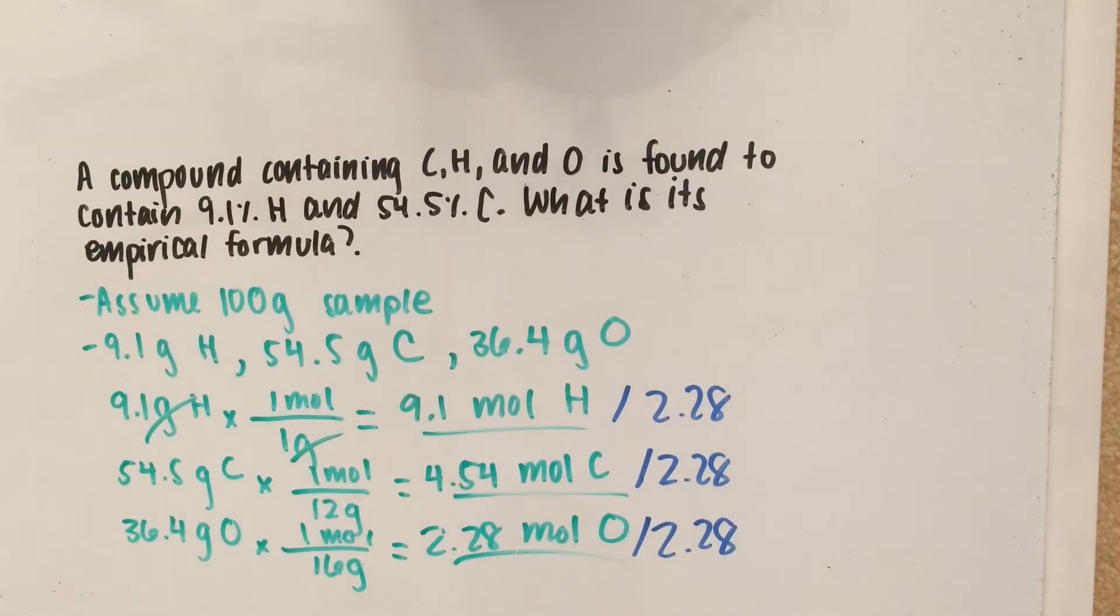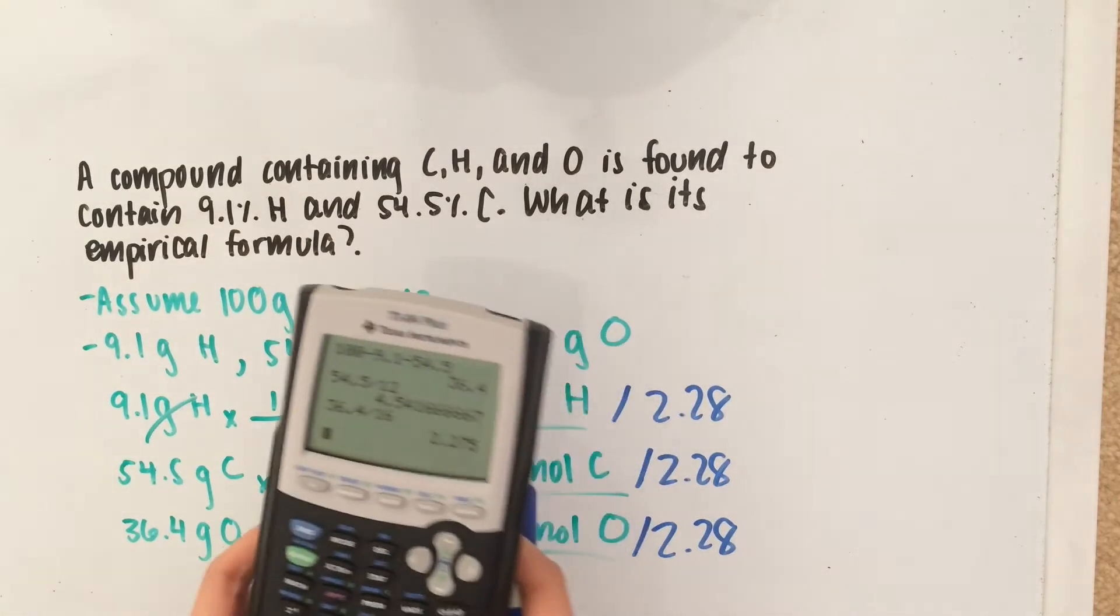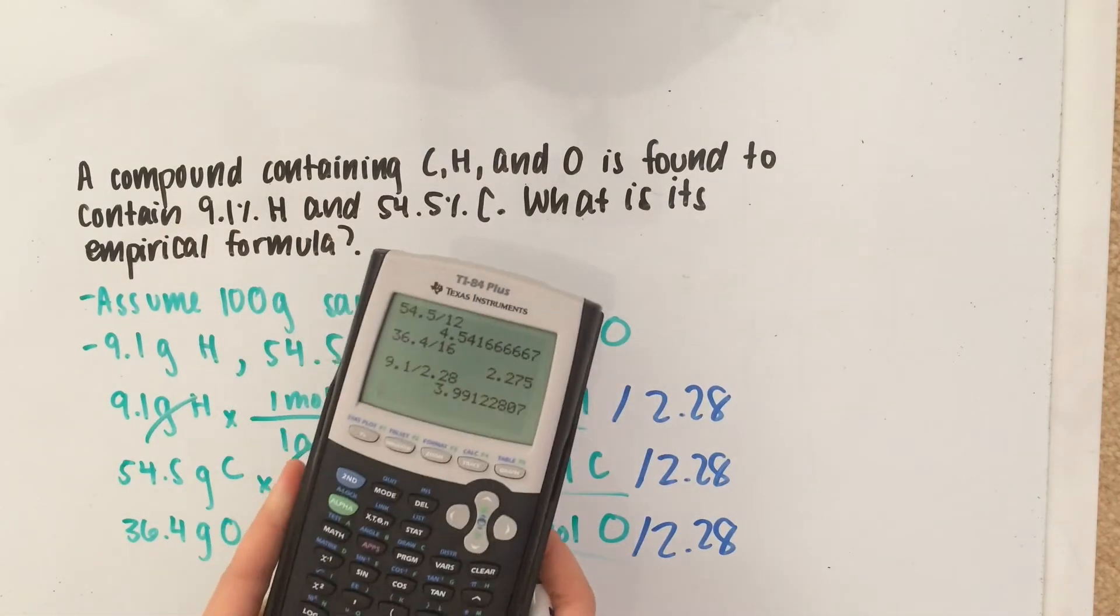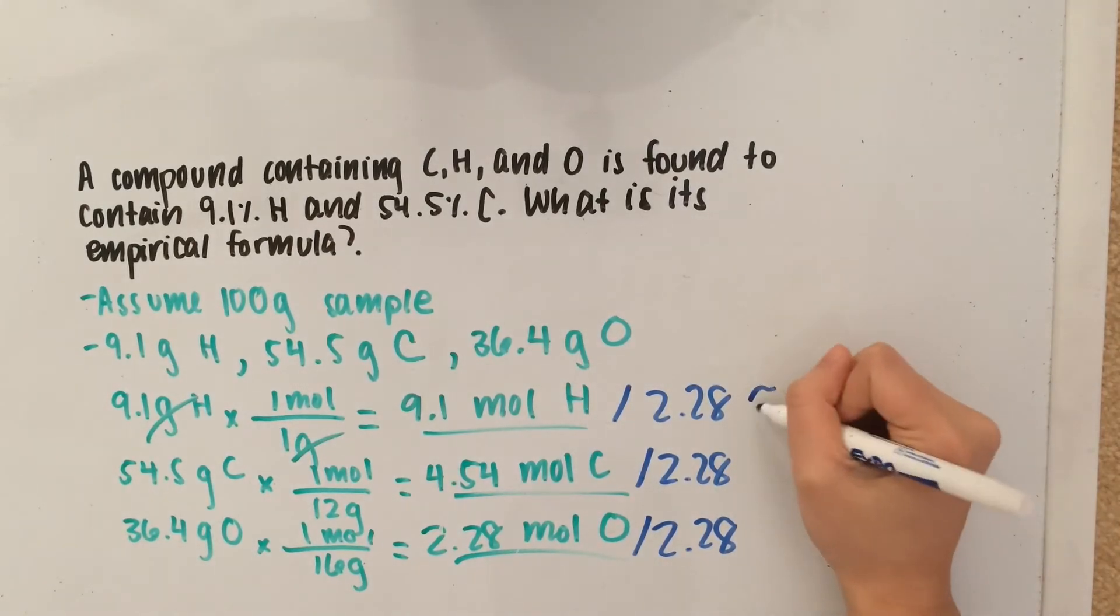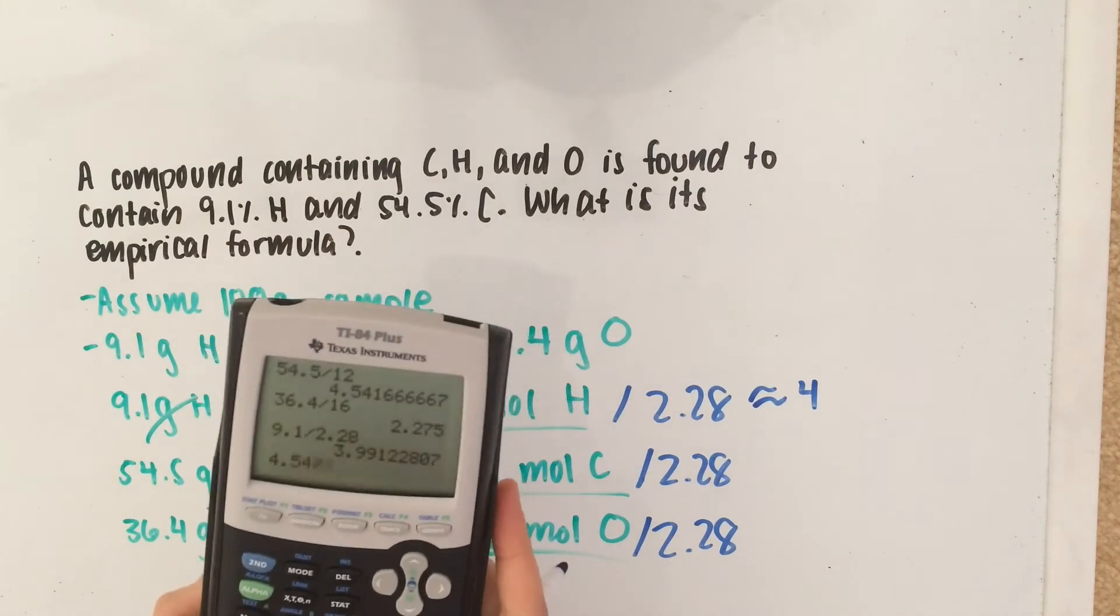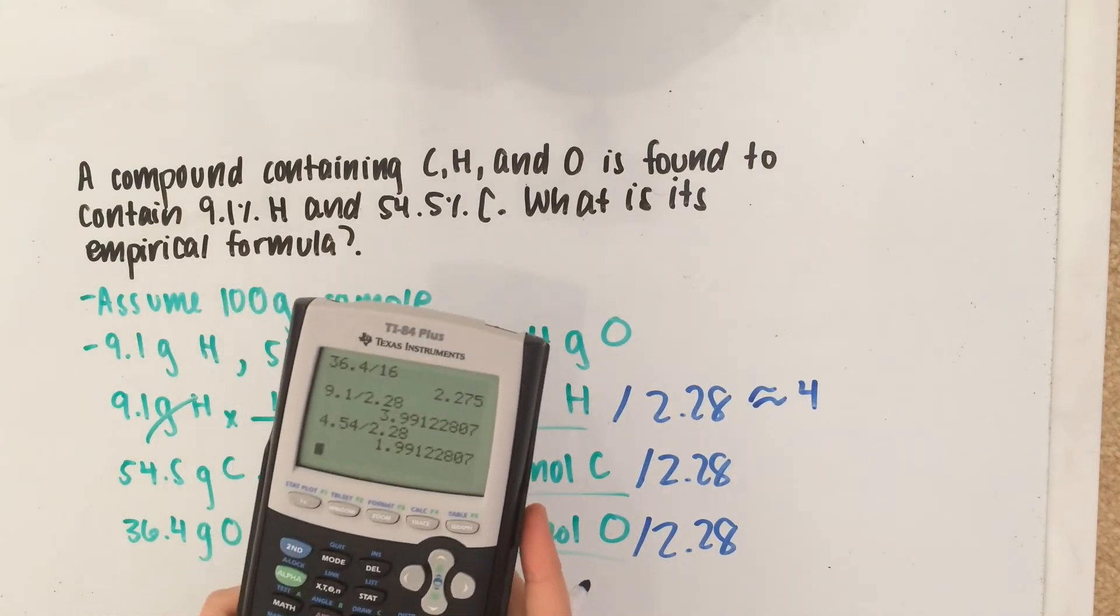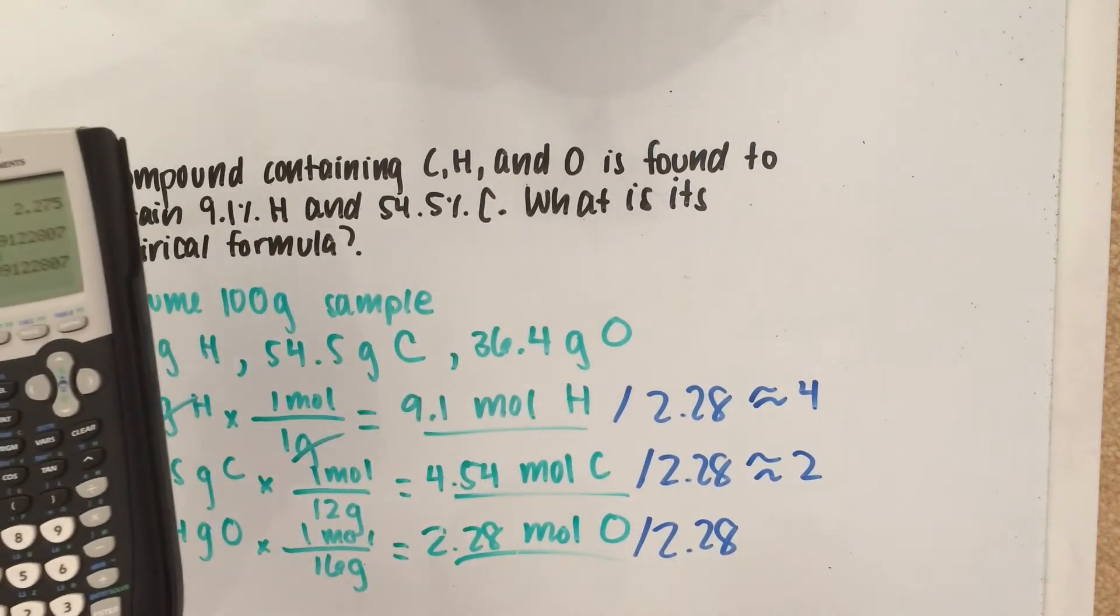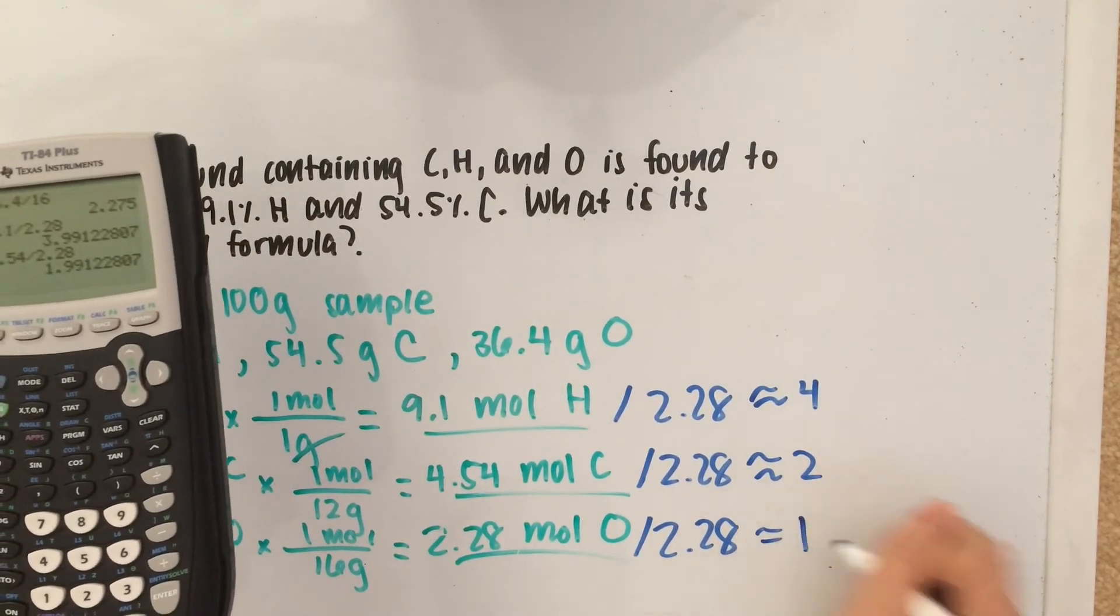And that's going to give you 9.1 divided by 2.28 is about 4, 4.54 divided by 2.28 is roughly 2, and this divided by itself is obviously going to give you 1.